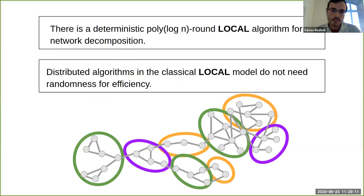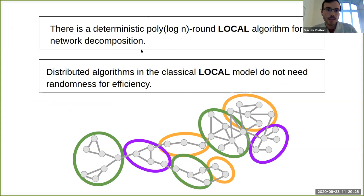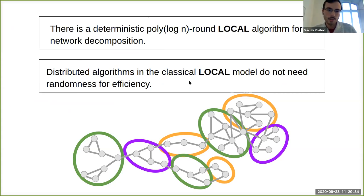Our technical contribution is a simple deterministic polylog n round local algorithm for network decomposition. As an application, we get that distributed algorithms in the LOCAL model of computing do not need randomness for efficiency. That's all, and I'll be happy to answer your questions.